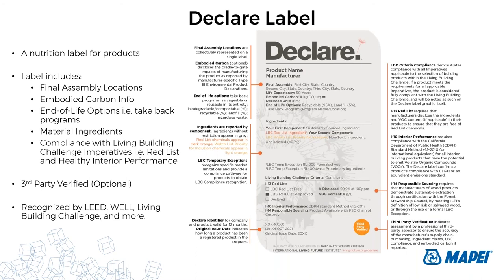The Declare label looks like a nutrition label for products and is also a multi-attribute product certification. Declare labels ask three questions: Where is the product coming from? What is it made of? — where manufacturers can declare ingredients and compliance with the Red List — and where does it go at the end of its life? The label includes information about final assembly locations, embodied carbon, end-of-life options such as take-back programs or recyclability, material ingredients, and compliance with Red List and healthy interior performance imperatives within the Living Building Challenge.